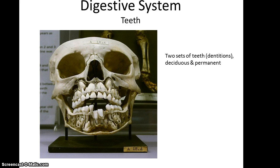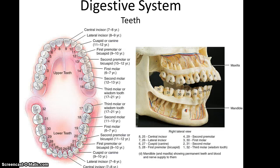Humans have two sets of teeth, or dentitions. Deciduous are the first, or baby, teeth, and over time, as the person grows, they are replaced by the permanent teeth. You need to know the names of the various teeth: there are three molars, two premolars, one cuspid, and two incisors on each quarter of the total number of teeth.